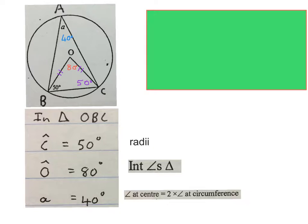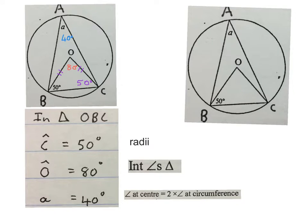Then we will say small letter A equals 40 degrees, angles at the center is 2 times the angle at the circumference. Please stop the video and look at this information again. All we had in the beginning was this and we generated everything up to here.